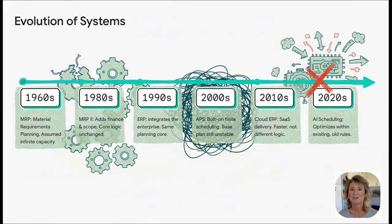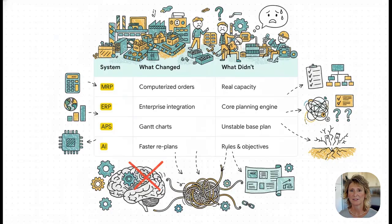This table. This tells the whole story. Yeah, the labels changed, the interfaces got slicker, we got Gantt charts and cloud delivery, but the one thing that didn't change? The core planning engine. The fundamental logic has been pretty much the same since the 1960s, and that's the absolute key here. All these new shiny systems are built on a 50-year-old foundation that frankly doesn't get how a real job shop works.